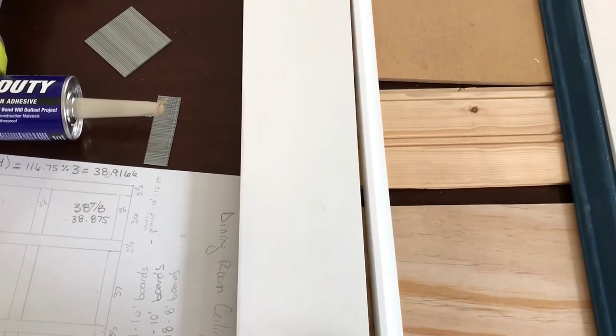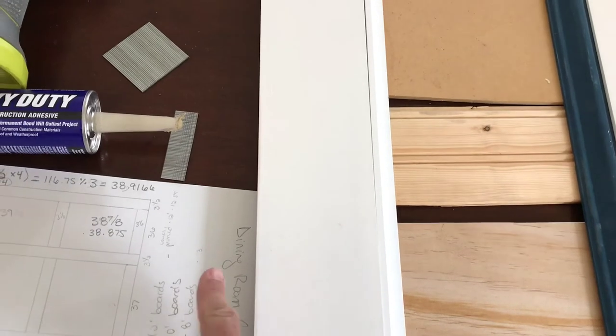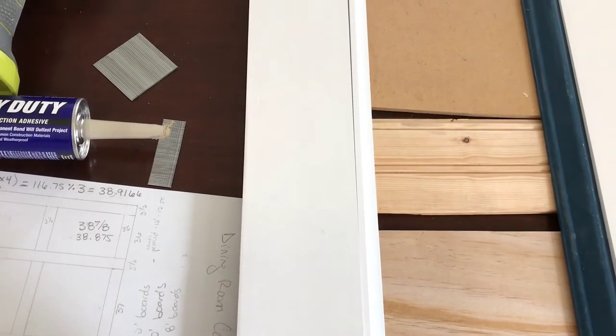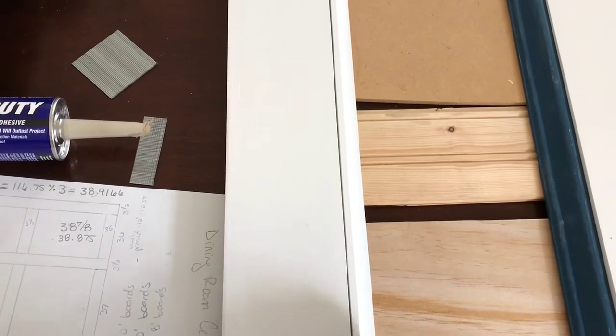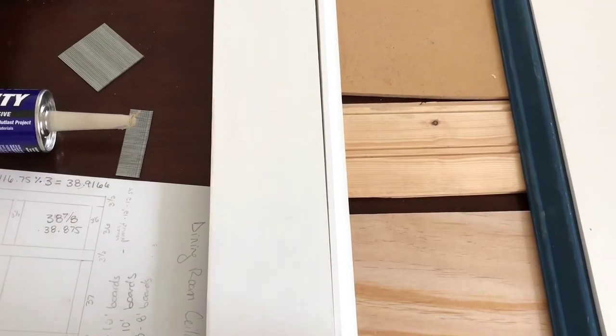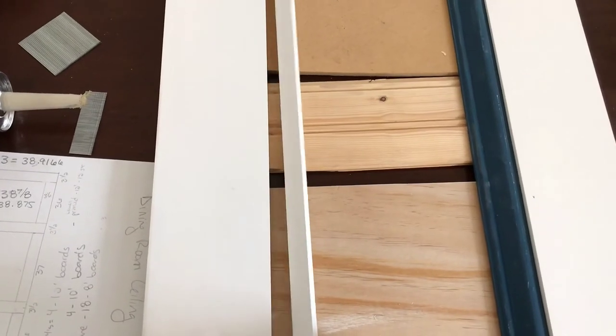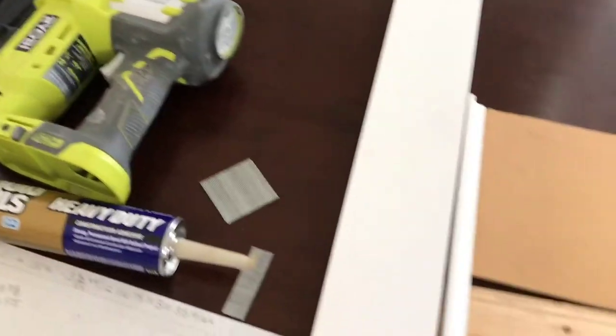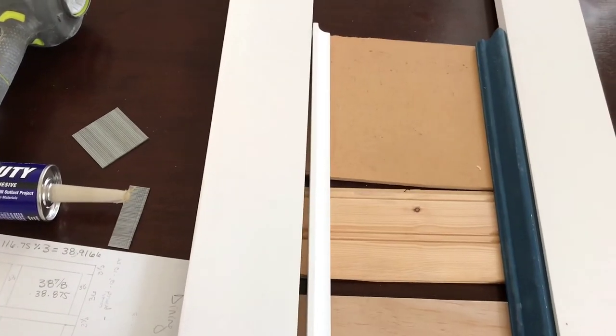When I install my cove molding against this 1x4, I go for a shorter brad nail, about a half an inch, just because I'm only installing the cove molding into the 1x4 trim. It's not going into the ceiling. And this PVC molding can be a little bit more delicate, so I reduce the pressure on my brad nailer so that it doesn't fire the nail too far into that molding.